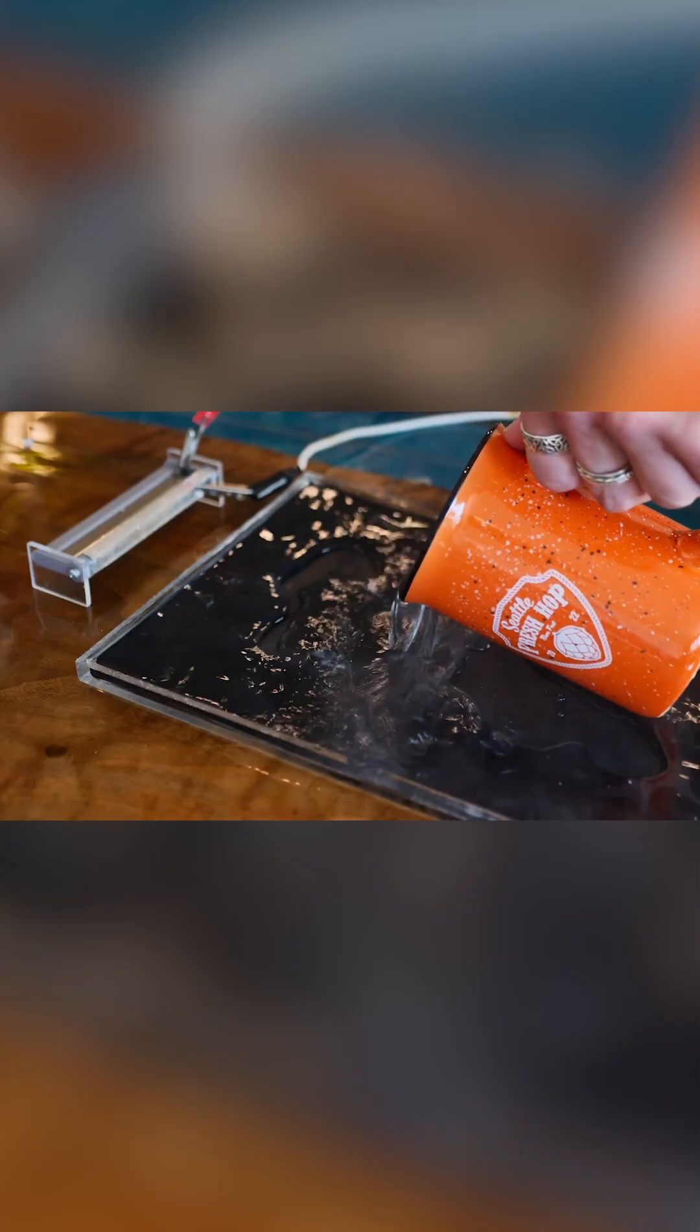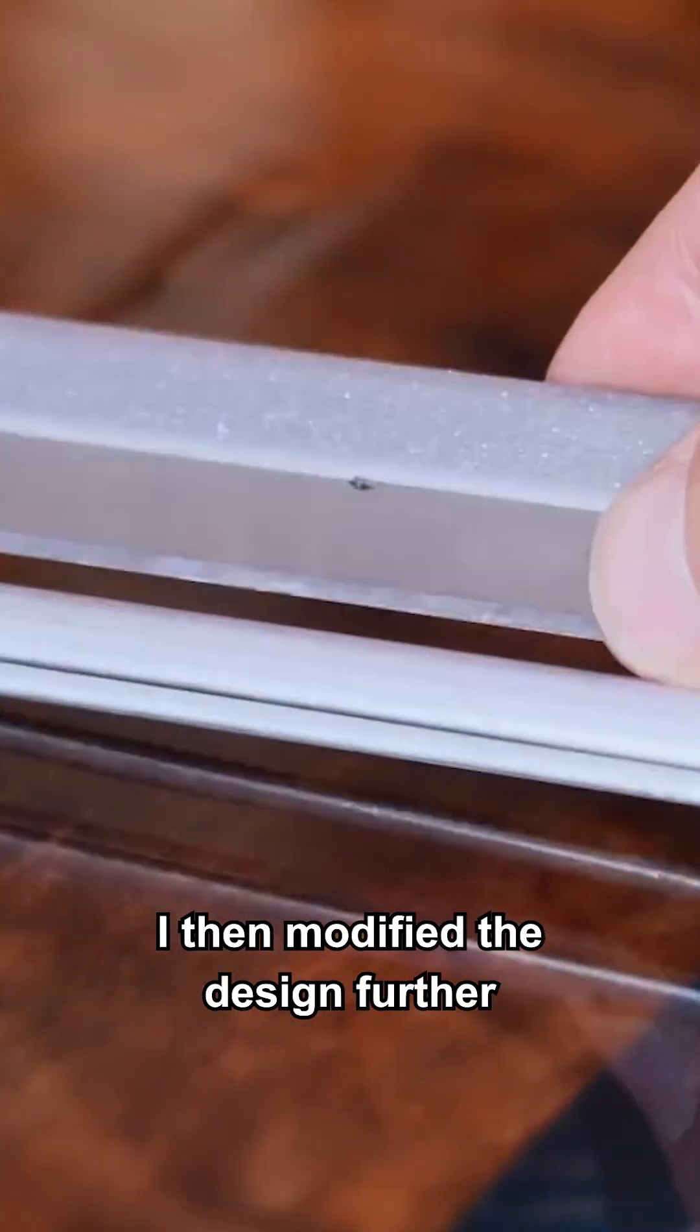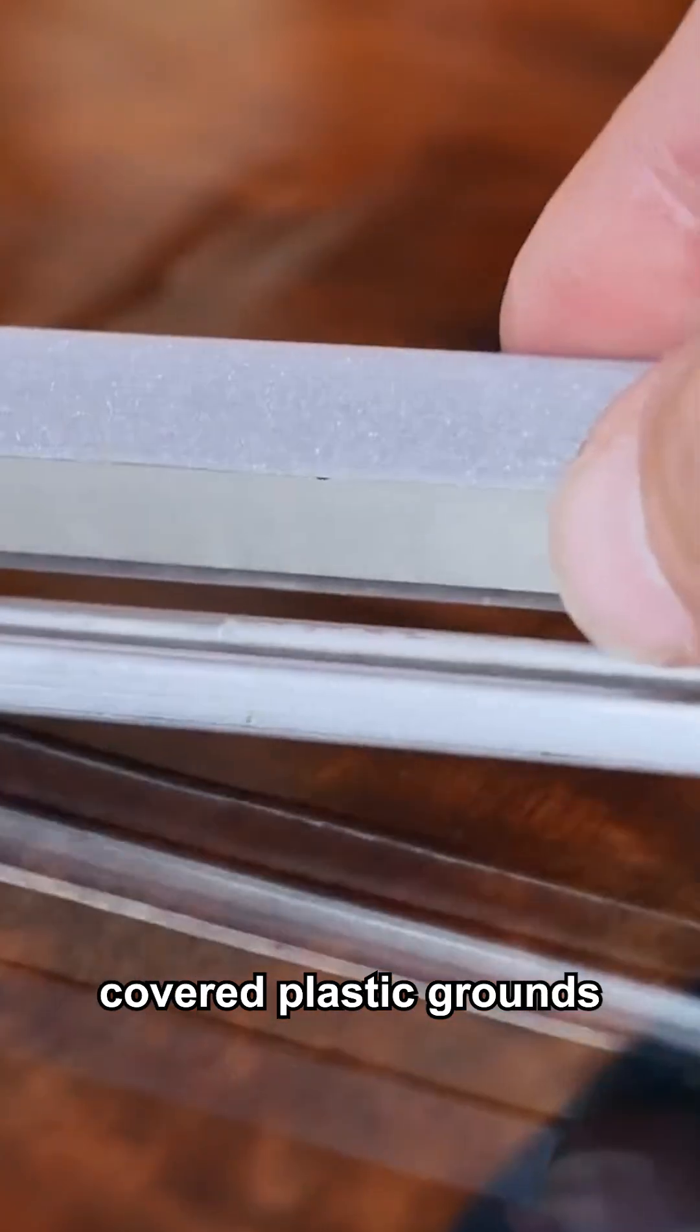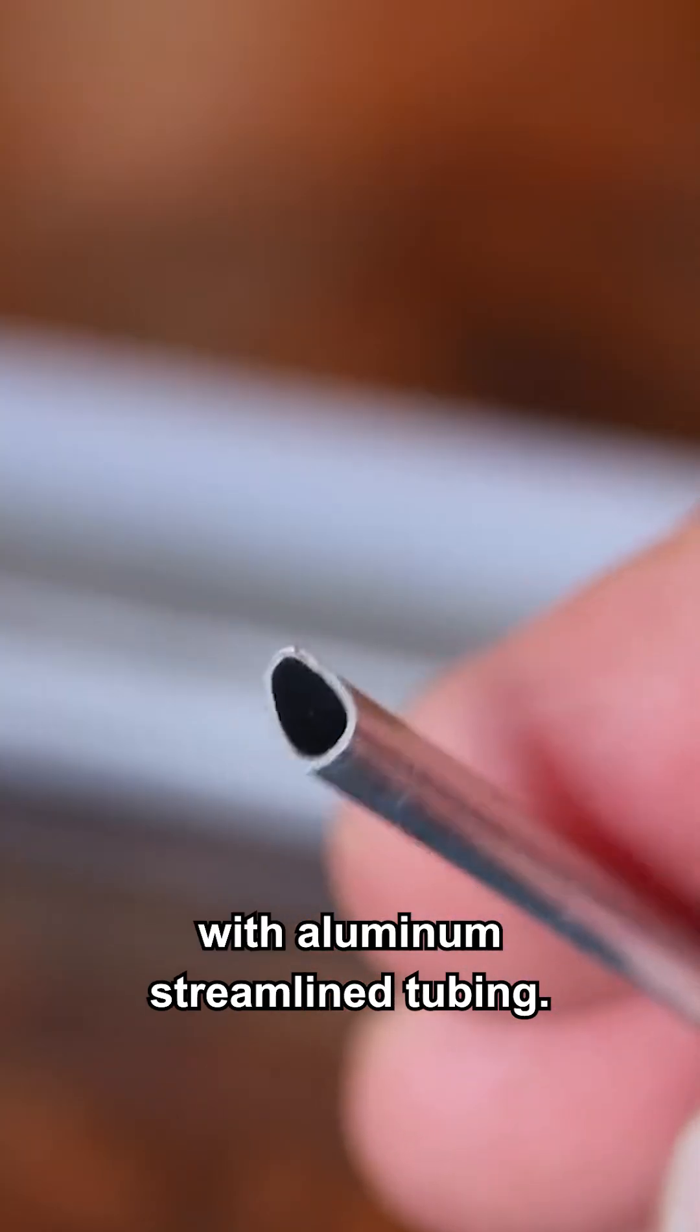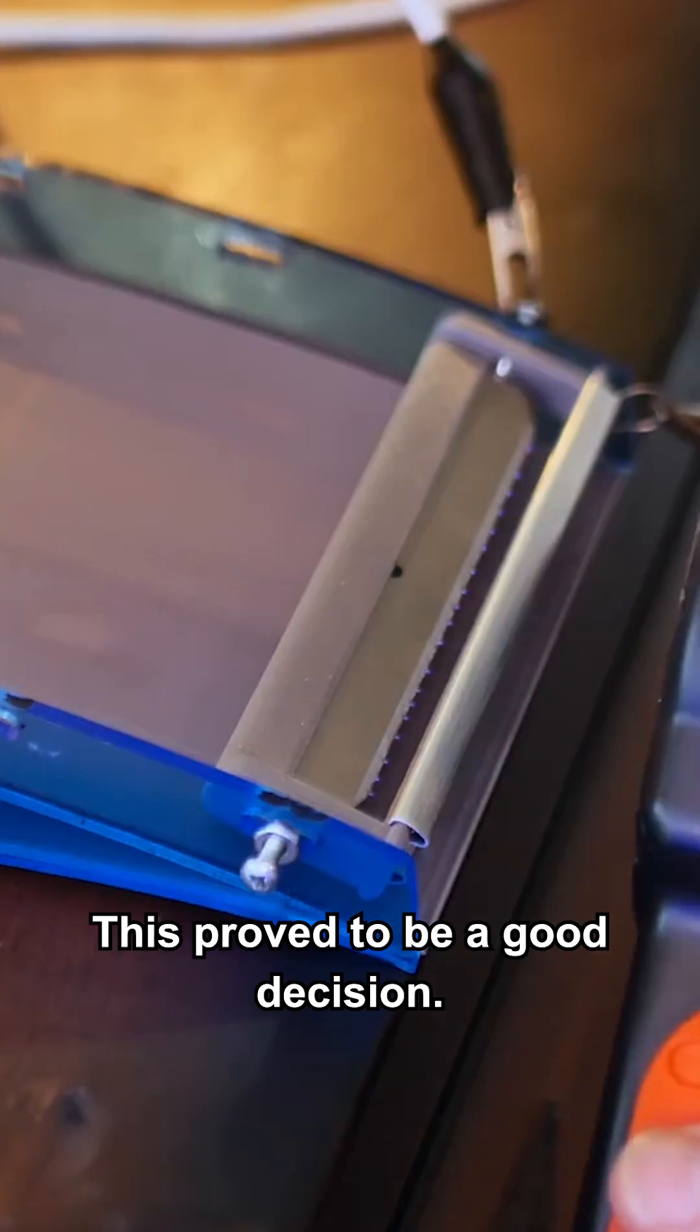I want to see that airflow. I then modified the design further by replacing the foil-covered plastic grounds with aluminum streamlined tubing. This proved to be a good decision.